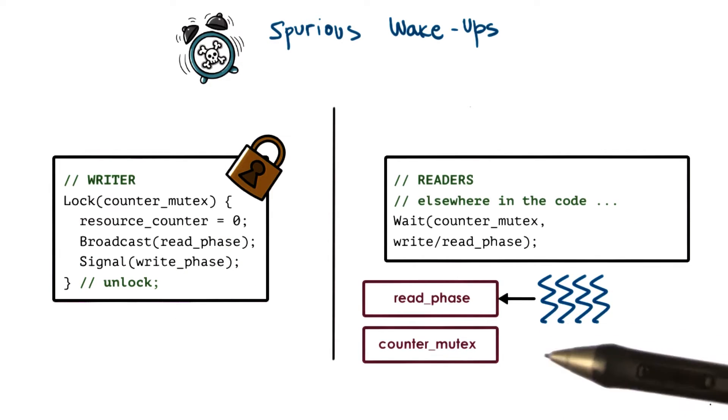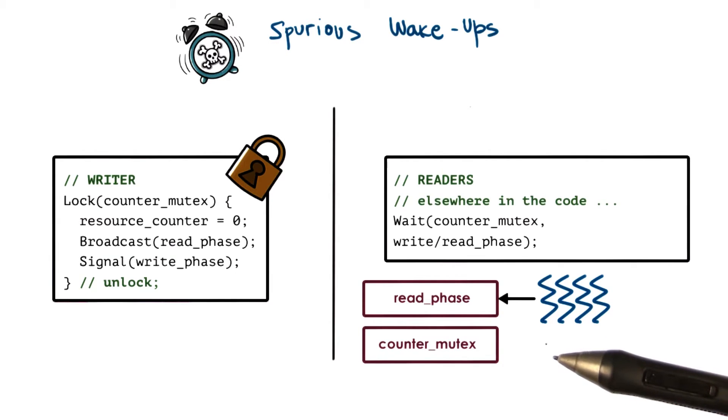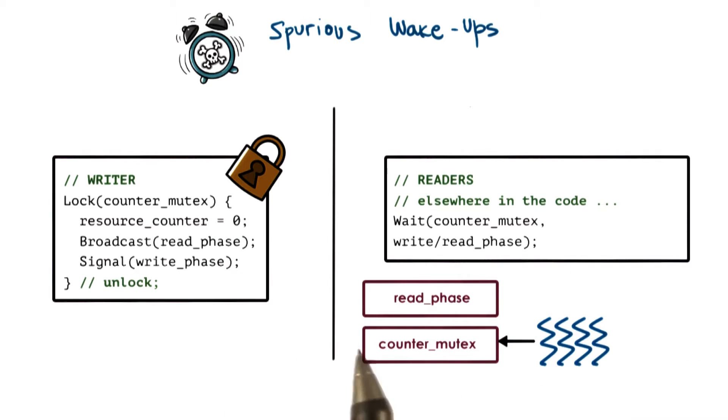They'll be woken up from one queue that's associated with the condition variable, and they'll have to be placed on the queue that's associated with the mutex. So we will end up with this type of situation as a result of this.